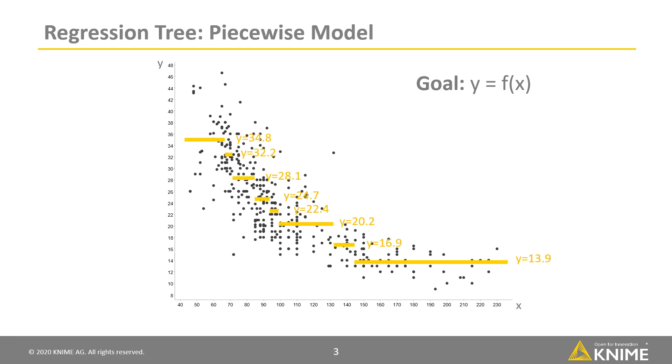One possible solution is to fit a piecewise regression model like this. In the first interval, every x produces y equals 34.8. In the second interval, y equals 32.2, and so on. A model like this is generated by the regression tree algorithm.